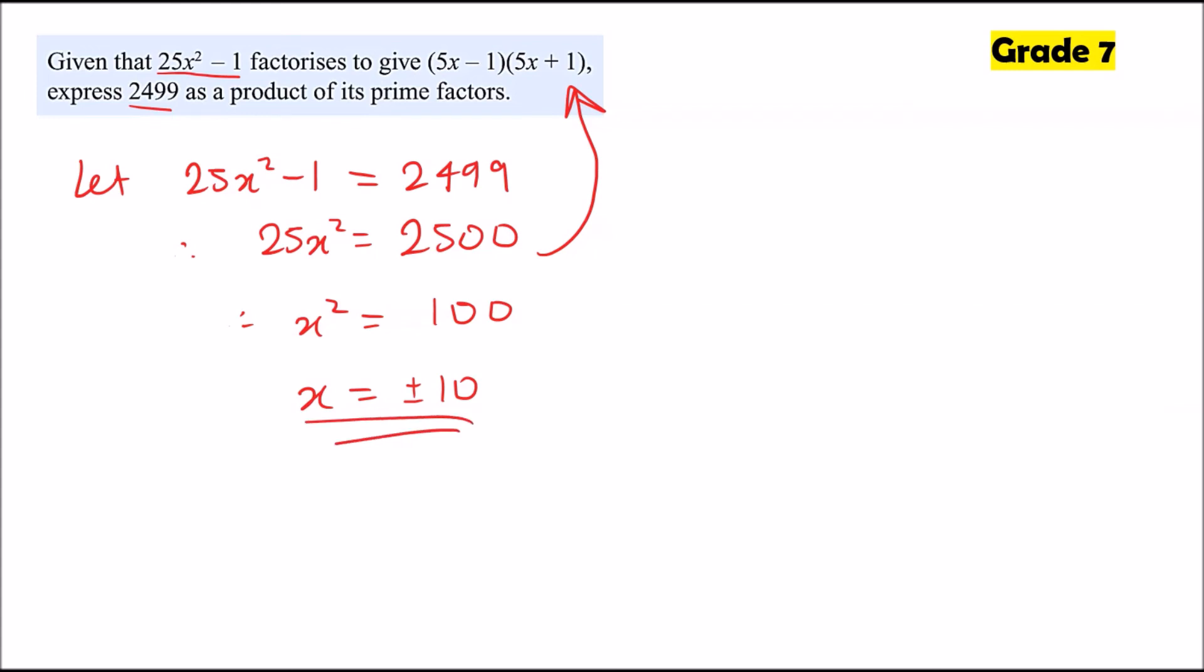Now, now we know what x is, let's go ahead and drop into the double bracket. So we can say straight away, let 2,499 equal, well, if you replace x with 10, you're going to have 5 times 10, which is 50 minus 1, which is 49. And then you put times because these two brackets are multiplied together. And then same thing, 5 times 10 is 50, add 1 is 51.